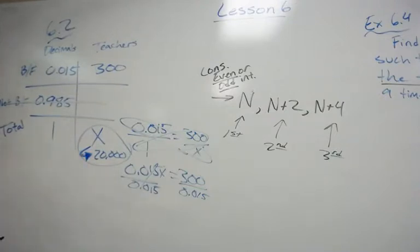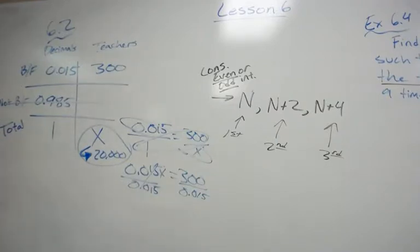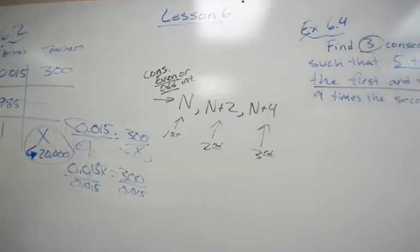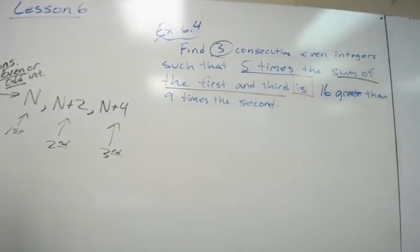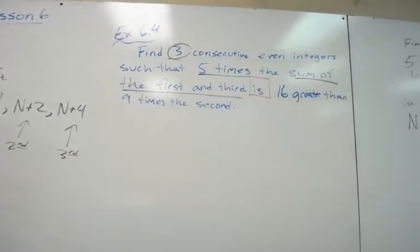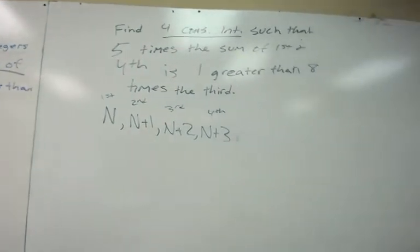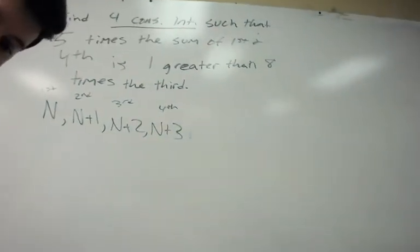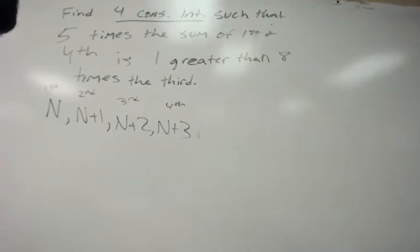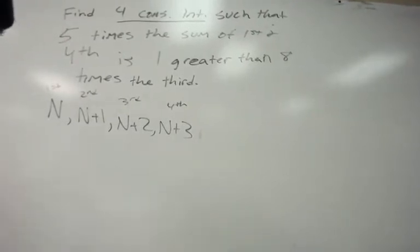If it were me, I'd use the ratio box — that's the easiest way to do those word problems in my opinion. I actually want to skip to example 6.5 and come back to 6.4. I think 6.5 is a little easier to start with for these.